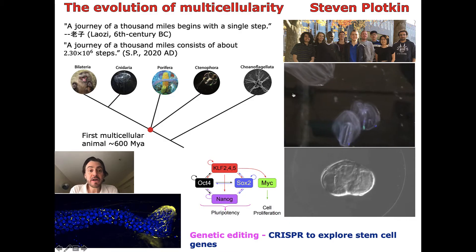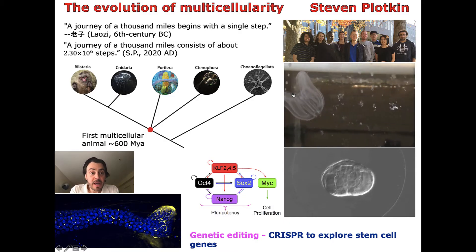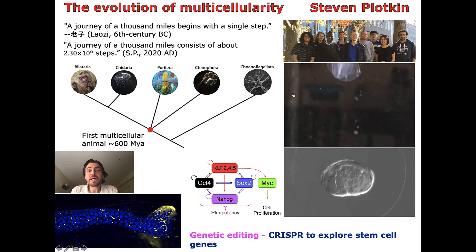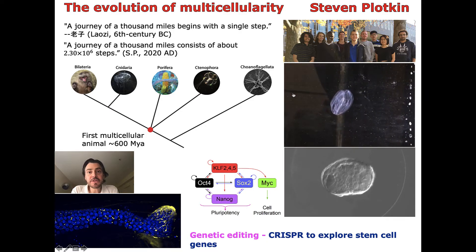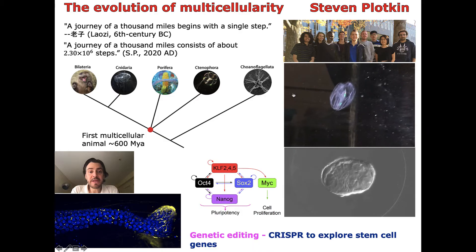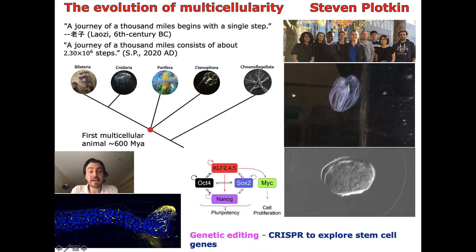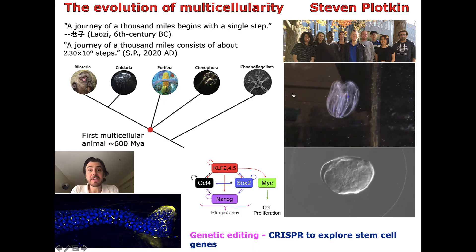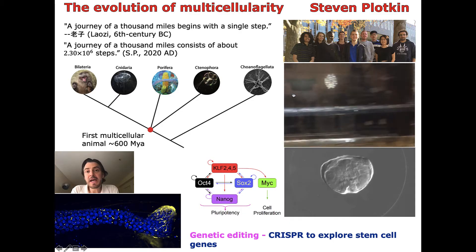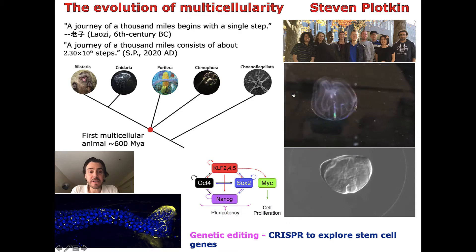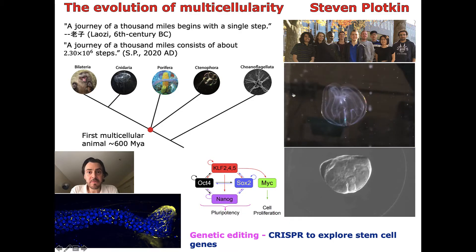So multicellularity has occurred up to 40 times on the tree of life. Hence, it's a solution that evolution finds repeatedly on different genetic backgrounds and different epochs of time. And thus, it has many aspects of universality to it — something that would be of interest to a physicist.